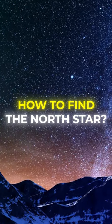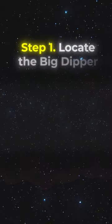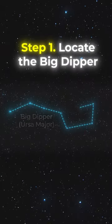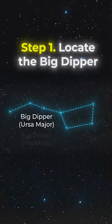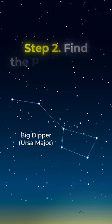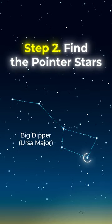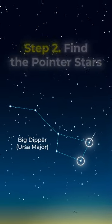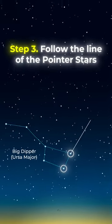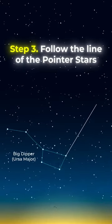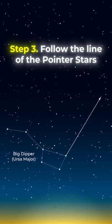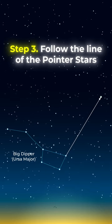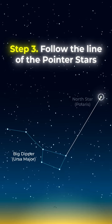How to find the north star: first, find the big dipper. Look at the two stars on the outer edge of the big dipper, imagine a straight line connecting these stars, and extend this line upwards about five times.